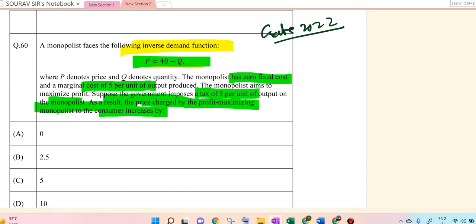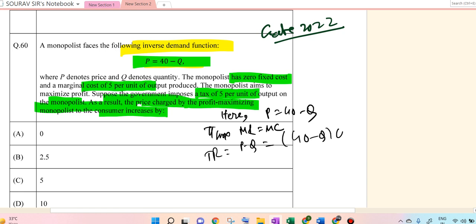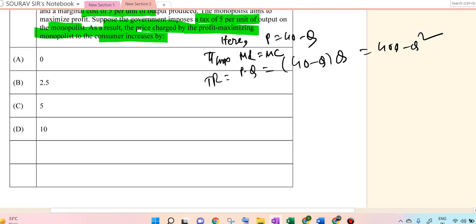So here, P equals 40 minus Q. At profit maximization, MR equals MC. Total revenue equals P times Q, so 40 minus Q times Q, which is 40Q minus Q squared. Marginal revenue is the derivative: 40 minus 2Q. MC is 5, so setting MC equal to MR: 40 minus 2Q equals 5, so Q equals 17.5.